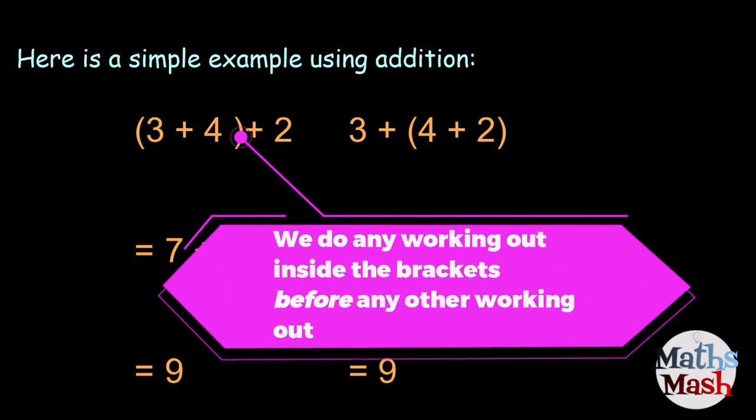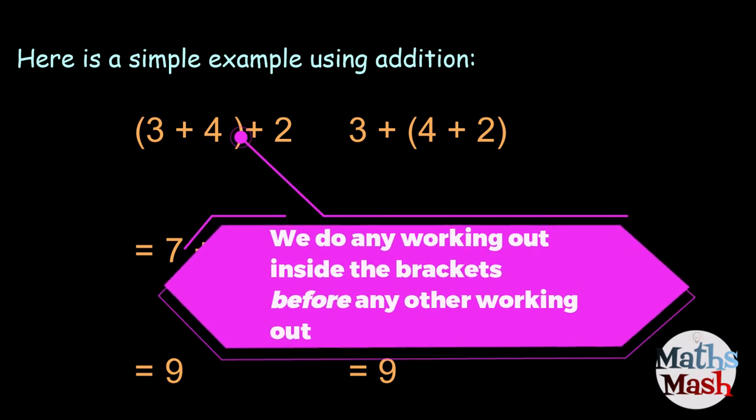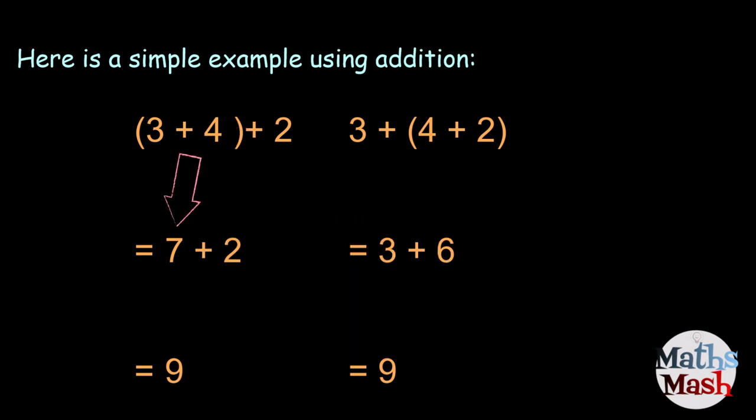So, here we have some brackets. We have to make sure that any working out that is in the brackets is done first. So, 3 plus 4 gives us 7. And then we copy down the plus 2. So, we have 7 plus 2. We add those together will give us 9.